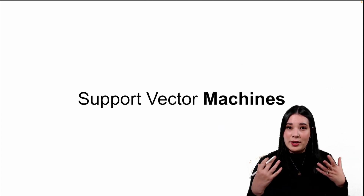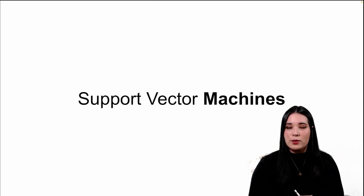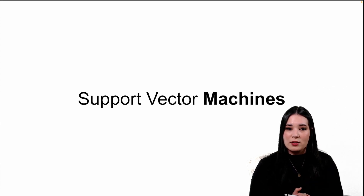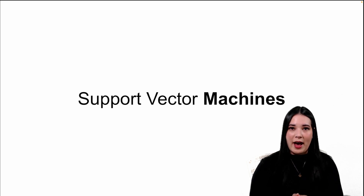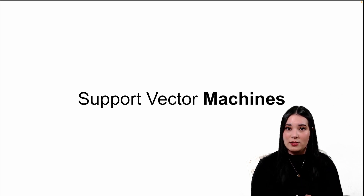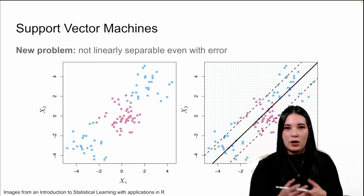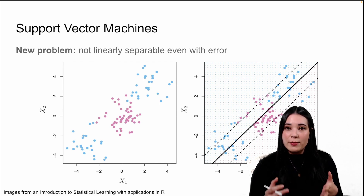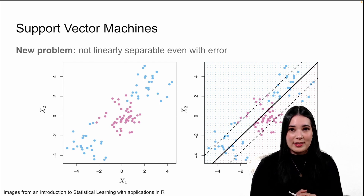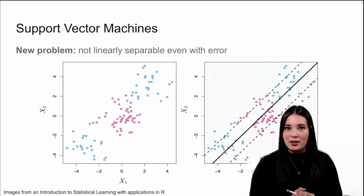Support vector classifiers solved a problem that we had with maximal margin classifiers. Similarly, support vector machines solve a problem that we have with support vector classifiers. Our new problem is that not all of our data is going to be linearly separable, even if we have the slack variables that we introduce with support vector classifiers.